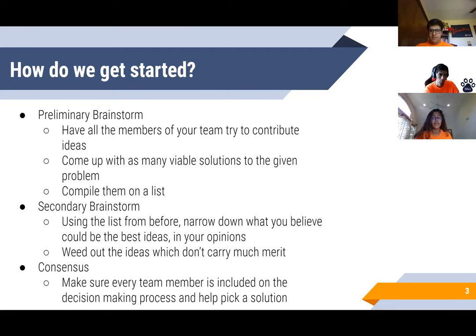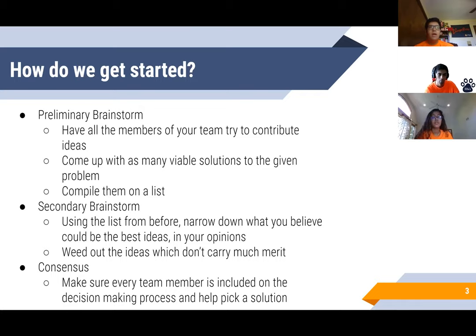Once you have a list of ideas, use a secondary brainstorm to flesh out those ideas and see which ones you can put more information into. Weed out the ideas that don't carry as much merit. Then once you've fleshed out a couple of ideas, you need to come to a consensus with your team, making sure that each team member is included in the decision-making process and helping pick a solution so that everyone feels included.